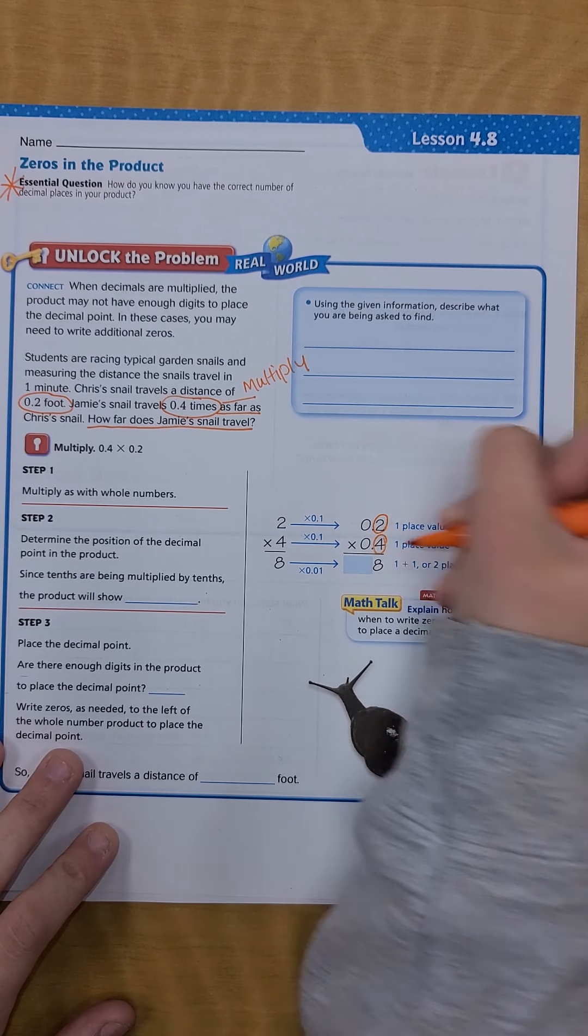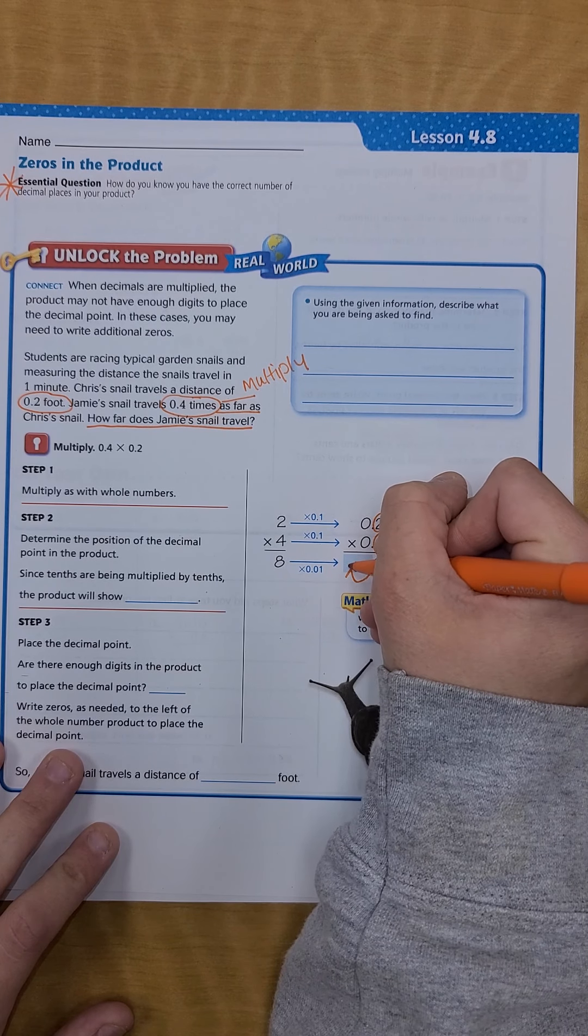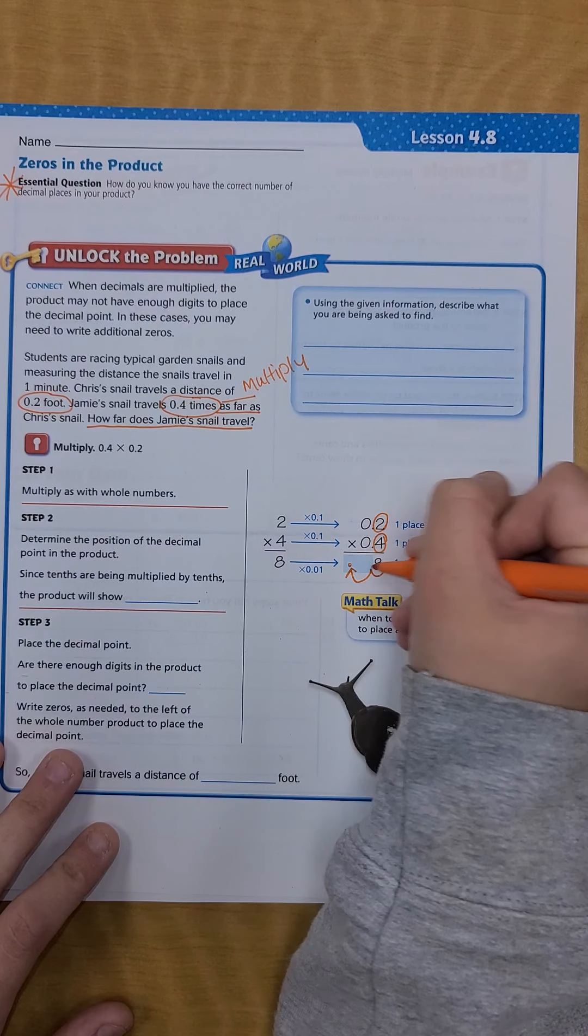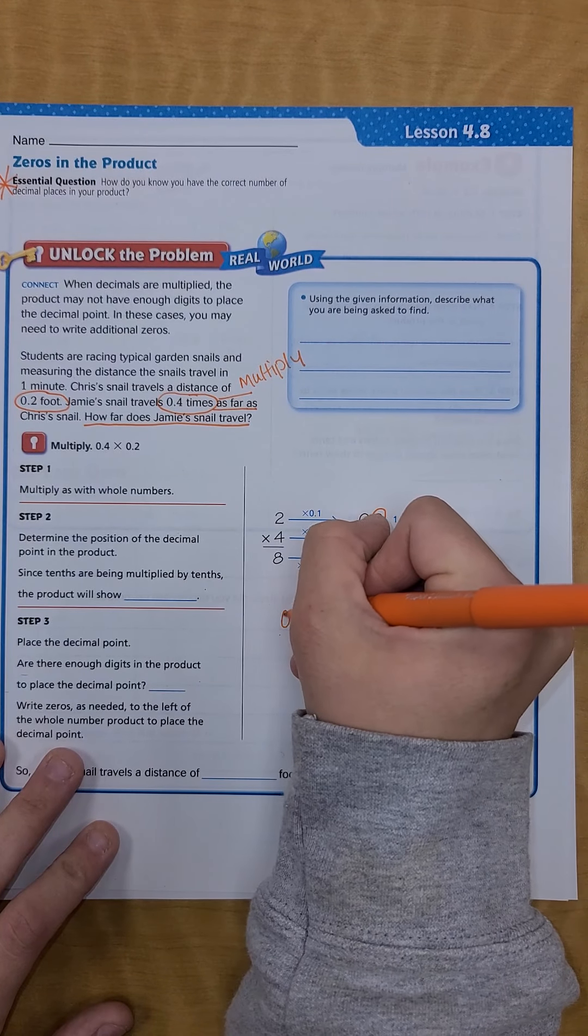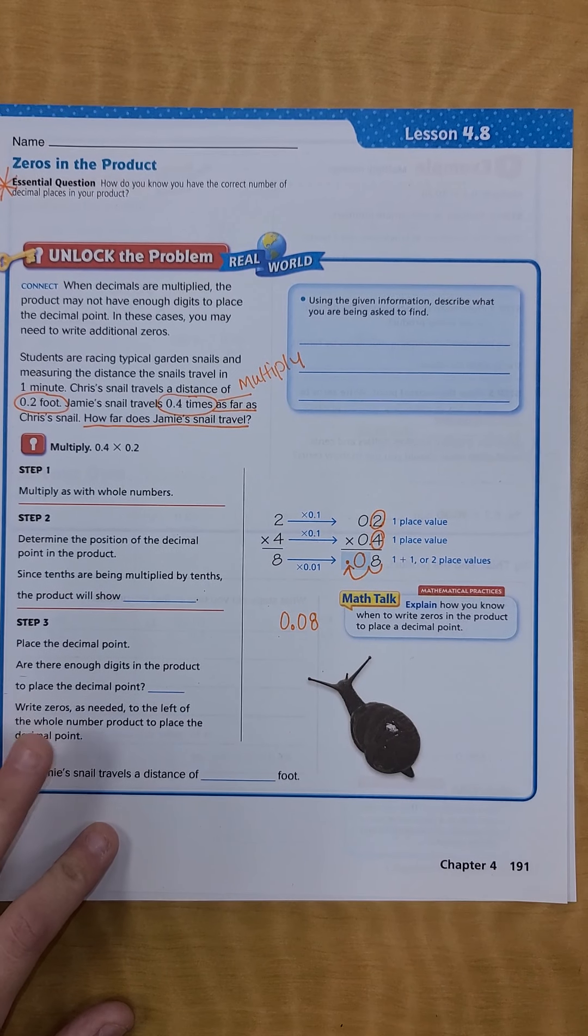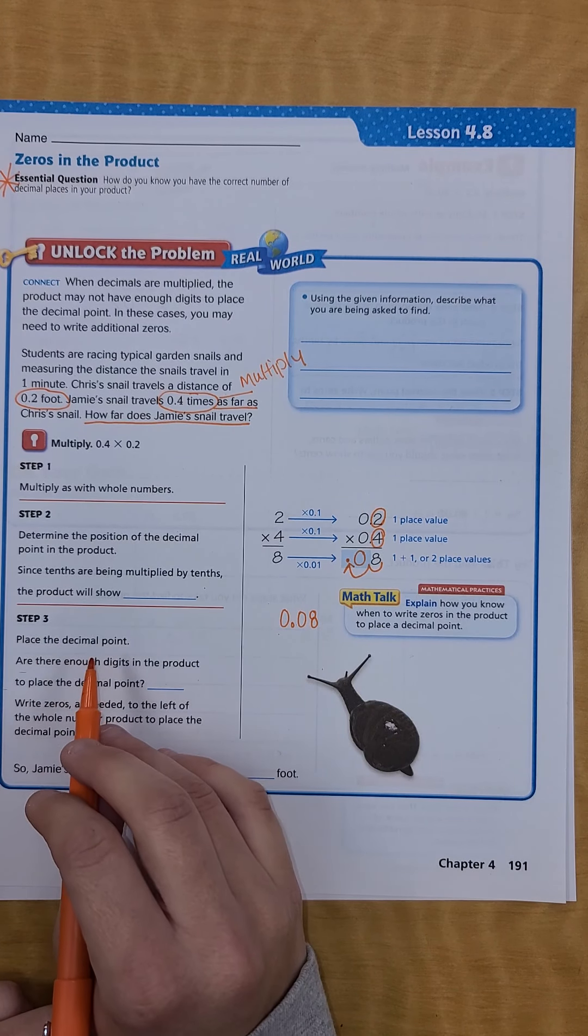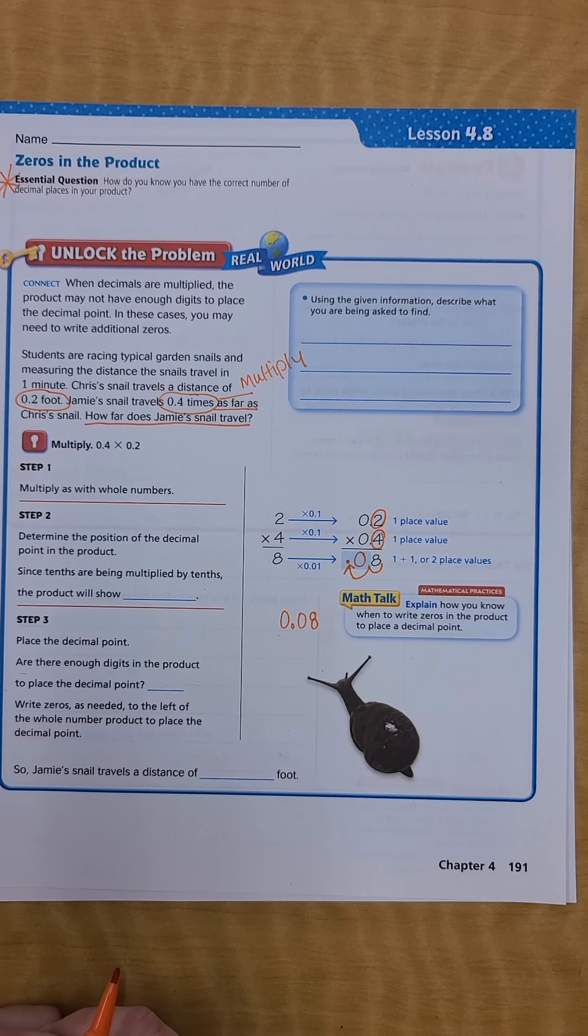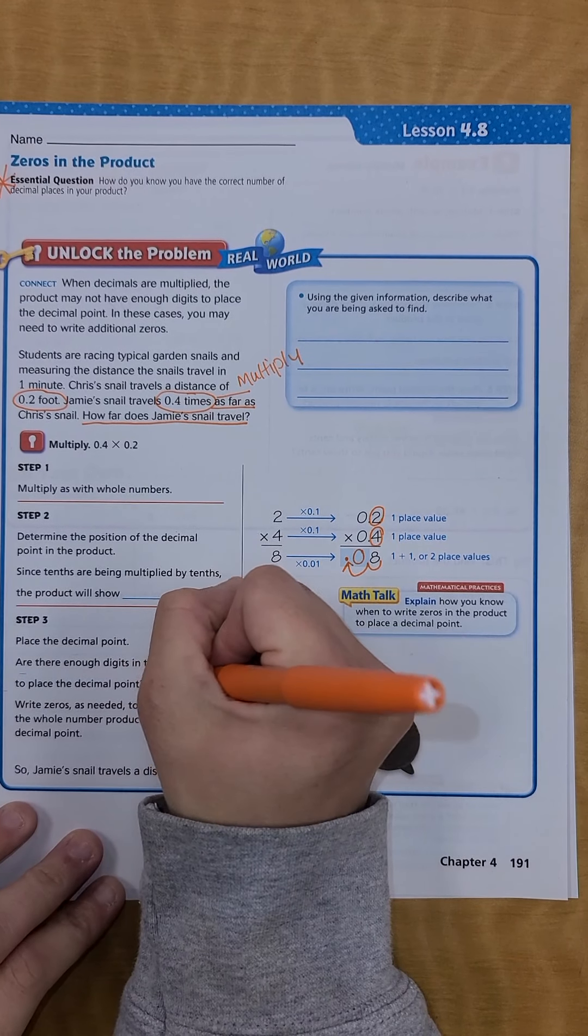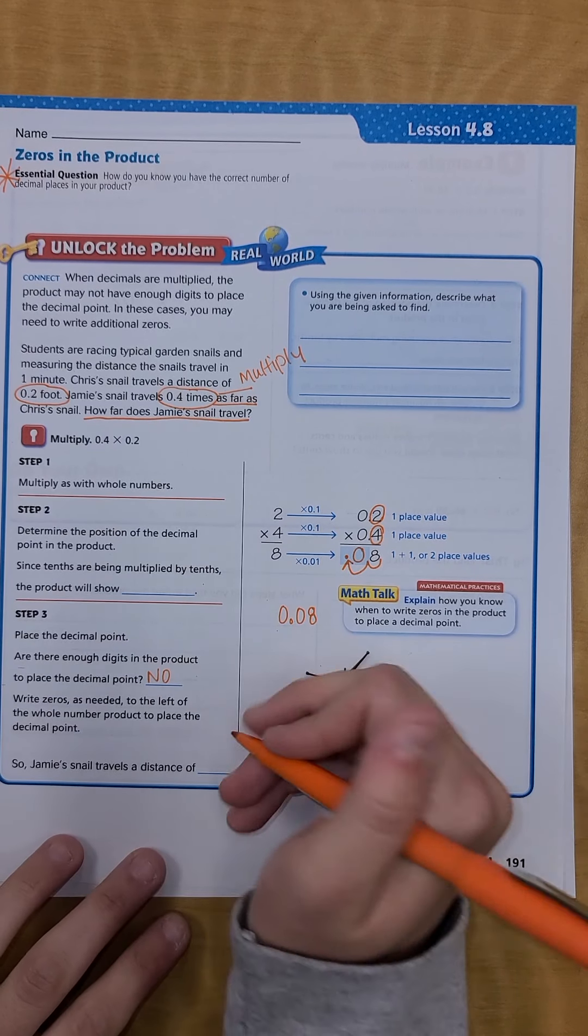Determine the position of the decimal point in the product. I know that there are one, two places behind the decimal, so I'm going to move it one, two places. So here's my decimal. Since there's an empty space right here, I'm going to put my zero in. Then when I rewrite it I'm going to say zero and eight hundredths instead of just 0.08. Are there enough digits in the product to place the decimal point? No, and that's why we had to add the zero. It's like a placeholder for it.